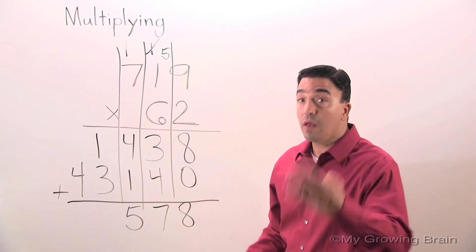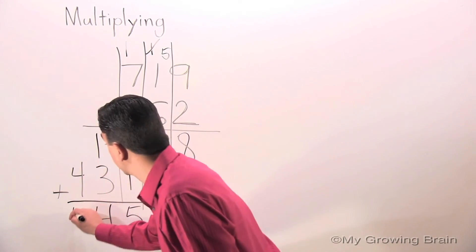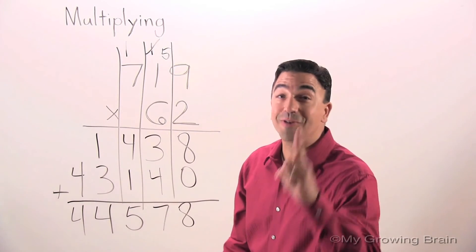Three plus one, four. We're just going to bring our four down. Don't forget the comma.